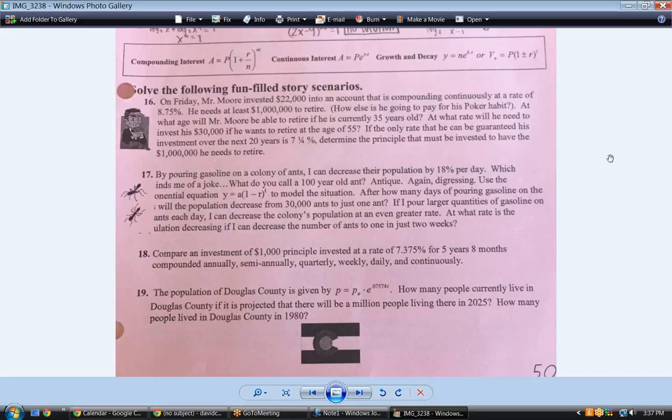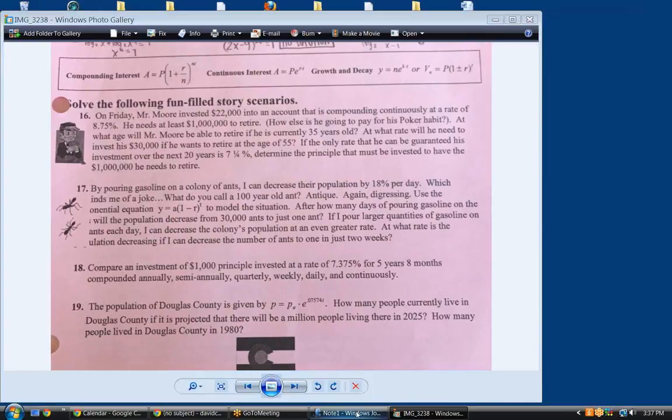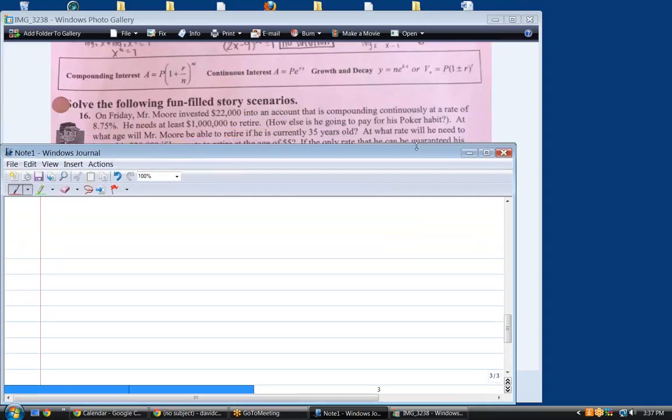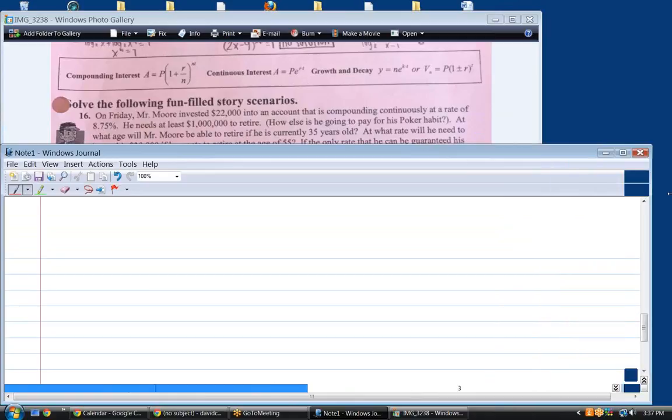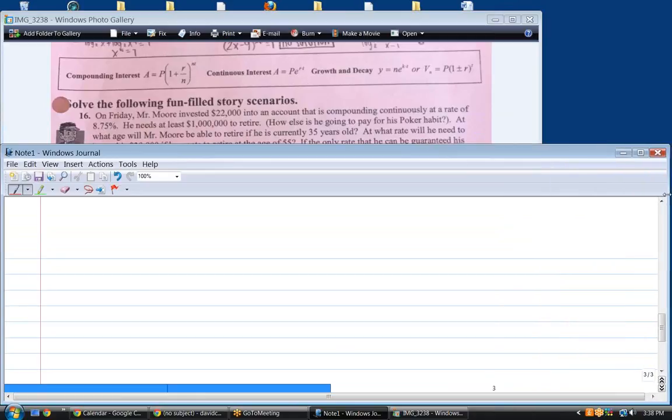So, for continuous interest, we have the equation A equals the starting principle, times the number E raised to the RT power.